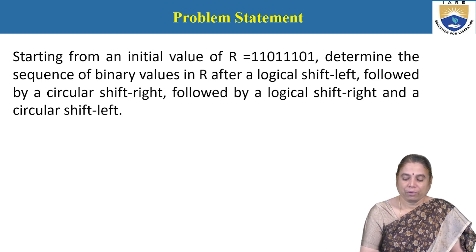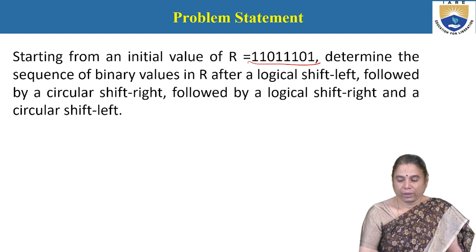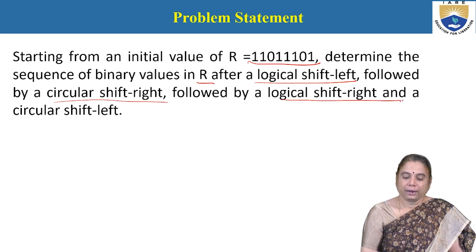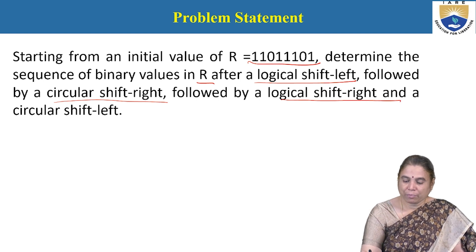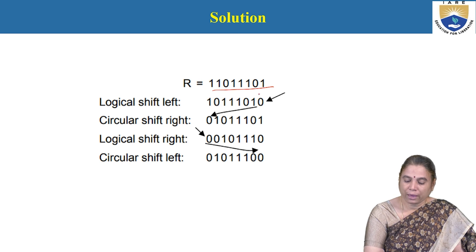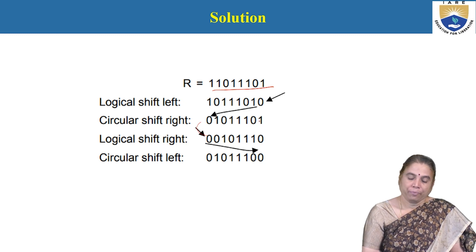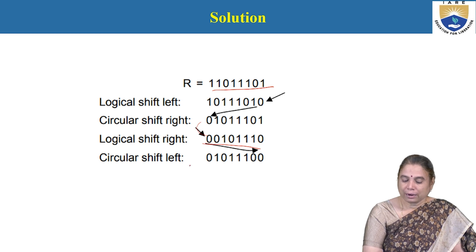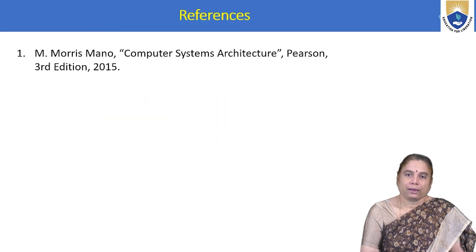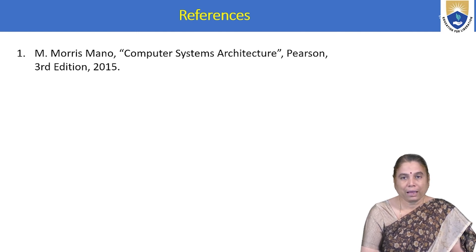The next problem: starting from an initial value of R, determine the sequence of binary values after a logical shift left, followed by a circular shift right, followed by a logical shift right, and then a circular shift left. For logical shift left, each bit moves to the left. For circular shift right, the leftmost bit is added to the LSB. Logical shift right gives the next value. Circular shift left gives the final result. These problems are taken from the reference textbook 'Computer System Architecture' by Maurice Mano.